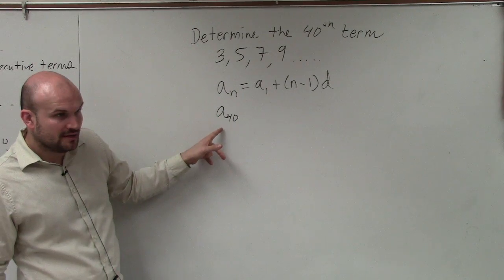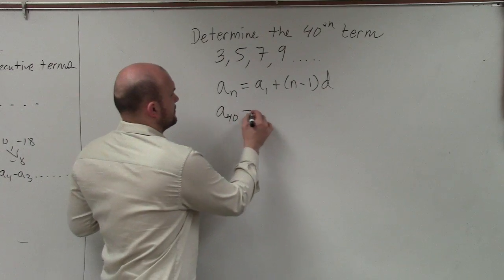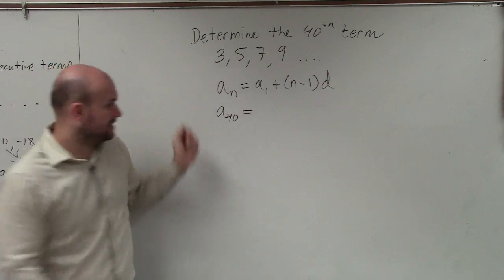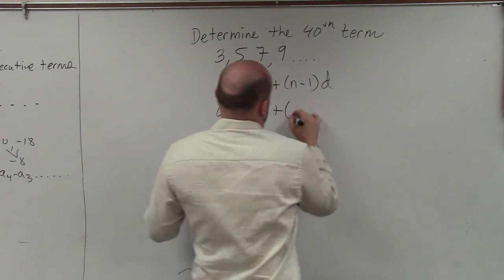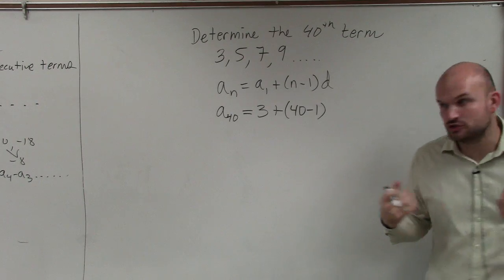So we want to find a sub 40. We're going to plug 40 in for n. Then do we know what the first term in the sequence is? 3. And then d is the difference, which is 2.